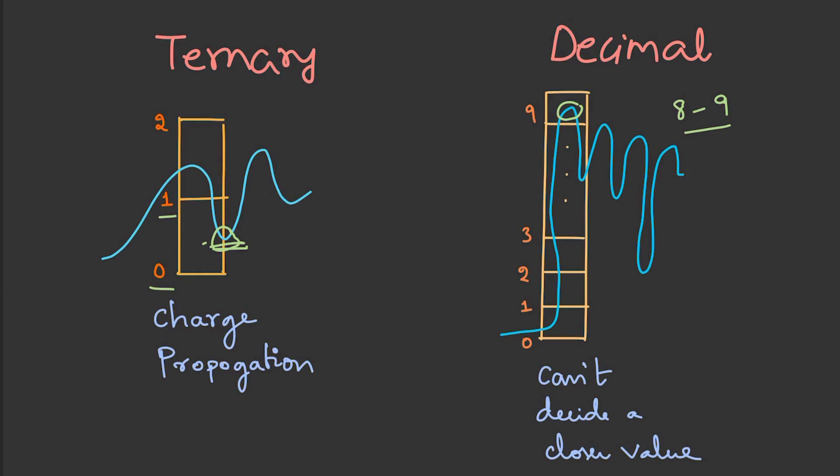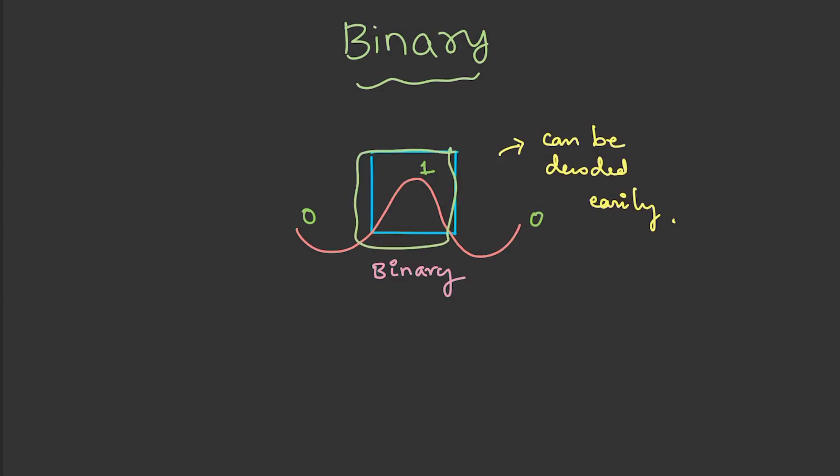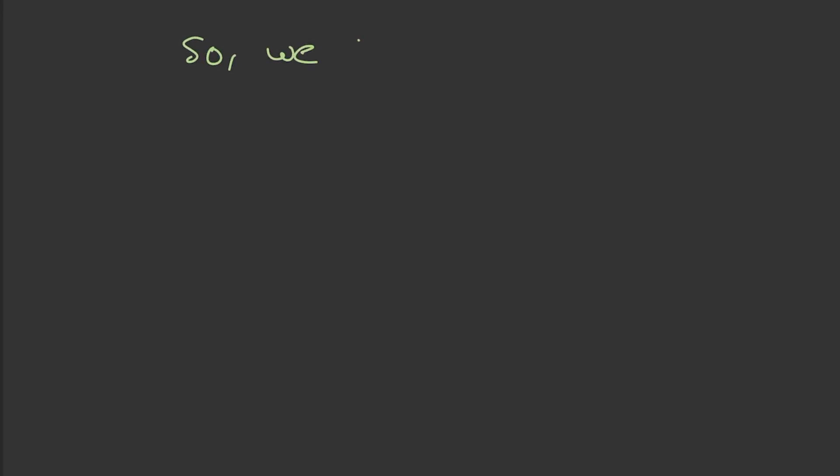So we tend to use binary over the existing ones. Let's see how binary is more helpful when compared to the existing systems. Consider the binary system. If you look at here, this is a capacitor which holds the charge. If the charge was propagated inside the capacitor, it will be treated as positive. If the charge was outside, it will be treated as negative. So 0 and 1 can be easily associated and decoded with the help of a binary system.